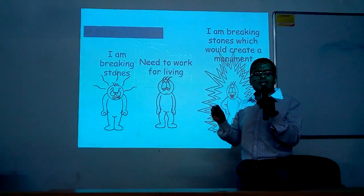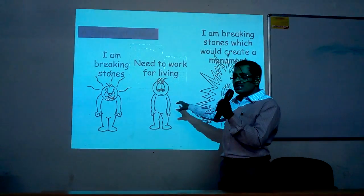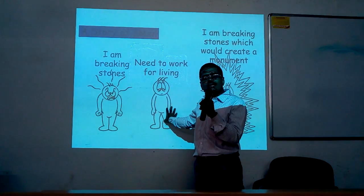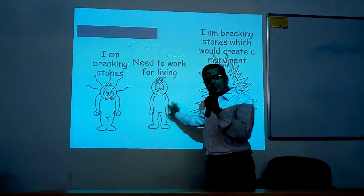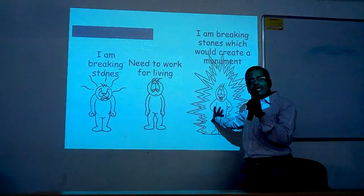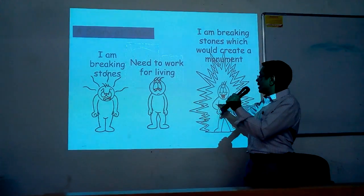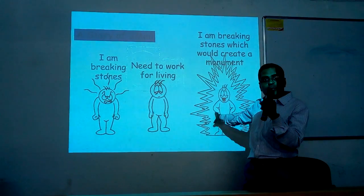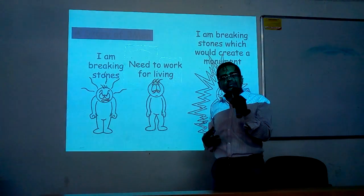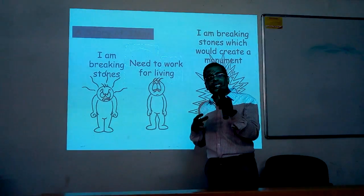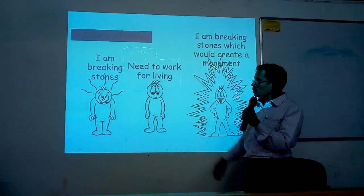The second person is somewhat better, but he is also focused only on earning his bread. The third person has a positive attitude — he says he is doing a task that will create a world-class structure. The idea of what has to be done is clear in his mind. These are the kinds of mindsets needed in society.